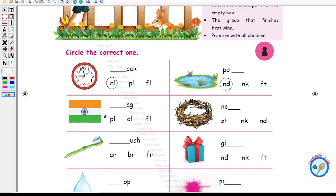Next, what is this? This is our Indian national flag. This is a flag. So what is the spelling for flag? F-L-A-G. So let me circle F-L here.